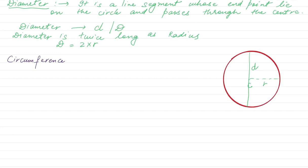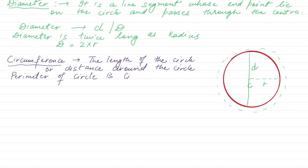So now let's learn about the circumference of the circle. Circumference is the length of the circle or the distance around the circle. Or we can also say this is the perimeter of the circle. Like we find the perimeter of square, perimeter of rectangle, similarly the perimeter of circle is the circumference.